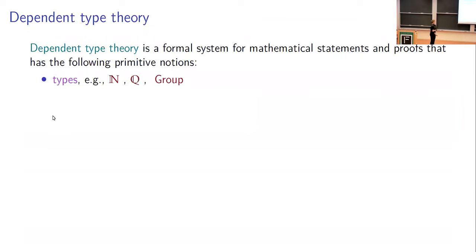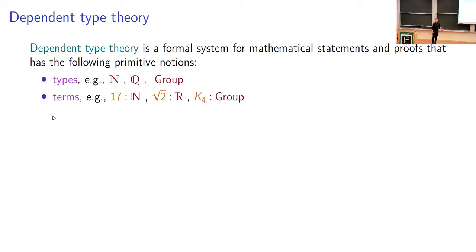So if you like these sorts of rules to explain logic, you might also like dependent type theory. Dependent type theory is this alternative formal system — really the core part of this alternative formal system that I'm so excited about. It has the following notions as primitive, to be compared with the traditional foundation of set theory on top of first-order logic. The primitives in type theory are called types — things like the natural numbers, the rational numbers, and there's a type of groups. Types can have higher structures than just sets.